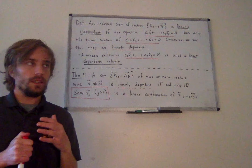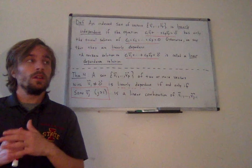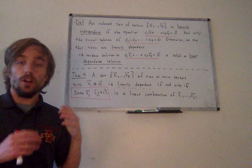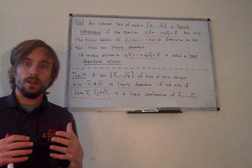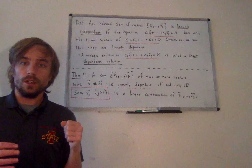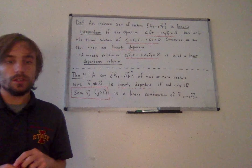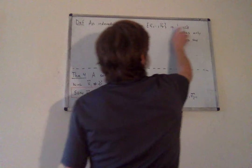Why is this theorem important? It states that we can find some vector that is a linear combination of the others. The important distinction is that this is 'some,' not 'all.' So if a set of vectors is linearly dependent, that does not mean all vectors are a linear combination of the others — it just means I can find some vector that is a linear combination of the others.